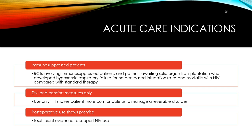For immunosuppressed patients — those on cancer medications, HIV patients, or those awaiting solid organ transplantation who develop hypoxic respiratory failure — NIV was found to be better compared to standard therapy, likely because they avoid aspiration and pneumonia associated with intubation. For patients on comfort measures or do-not-intubate orders, NIV can be used to make them more comfortable and has been shown to be quite effective. Questions on exams sometimes address comfort measures and NIV as a good choice in this population.